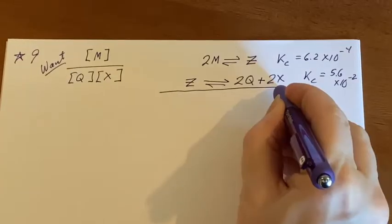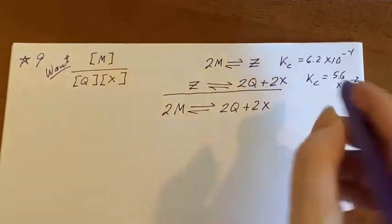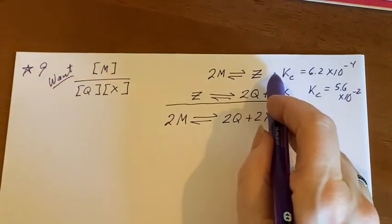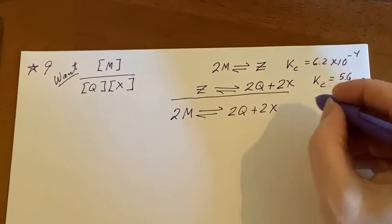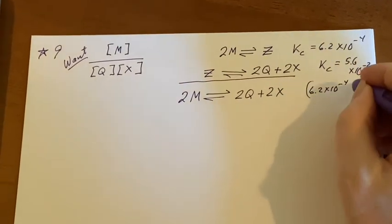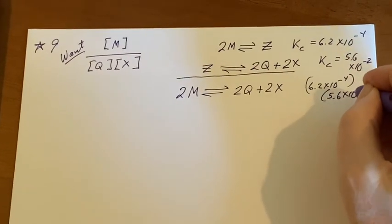If I add these, then I'll be able to cancel out the Z's. So if I add those, I get this. If I'm adding those, I am multiplying these. So this would be 6.2 times 10 to the negative fourth and that would be multiplied by the 5.6 times 10 to the negative 2.